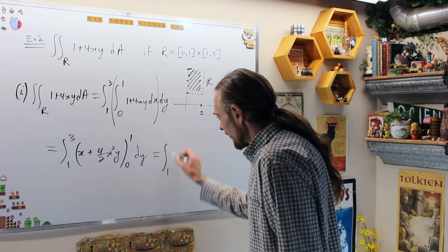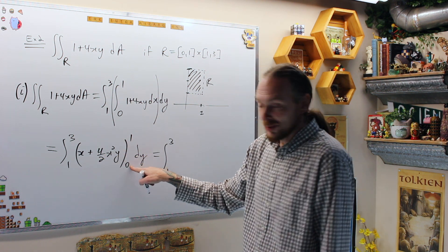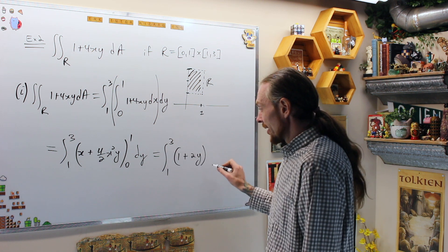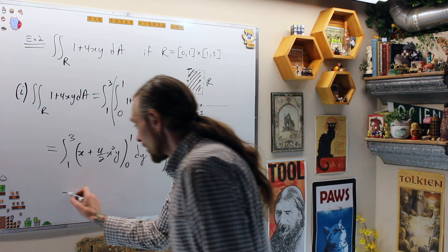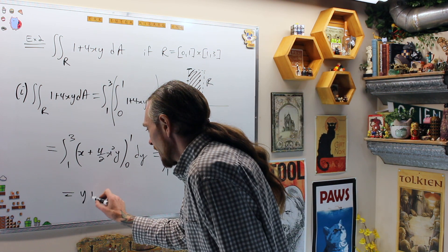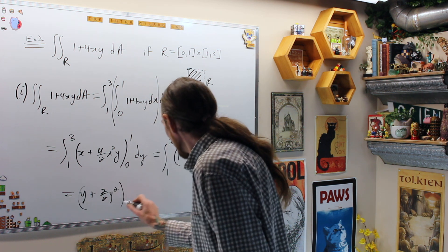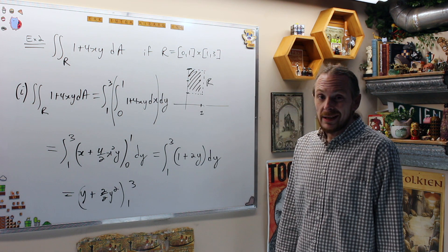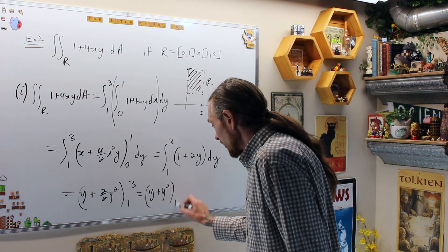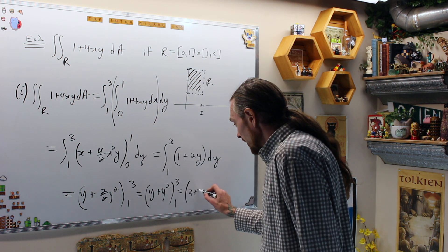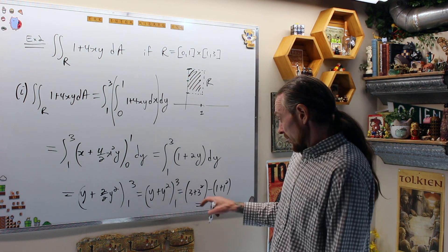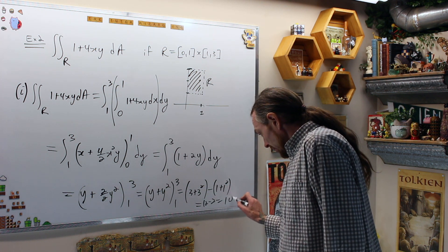Plugging in x = 1 (the x = 0 term vanishes), we get the integral from 1 to 3 of (1 + 2y) dy. Integrating with respect to y: y + 2/2 · y² = y + y², evaluated from 1 to 3. That gives (3 + 9) minus (1 + 1) = 12 minus 2 = 10.